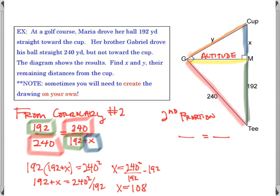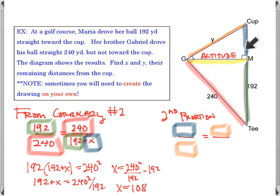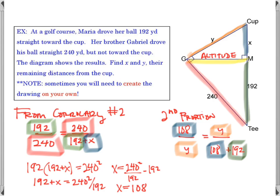If we have a second proportion to set up for Y, again the setup is the hard part. I take the piece of the hypotenuse adjacent to Y, then the whole hypotenuse — and now I know X, so I can substitute. Working through it by cross multiplying and simplifying gives me Y squared, and we go from there.